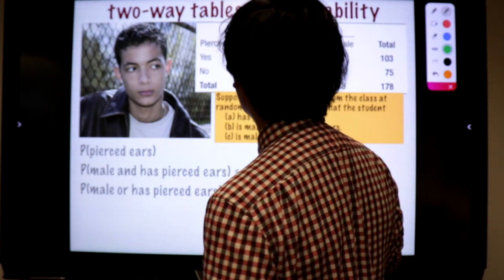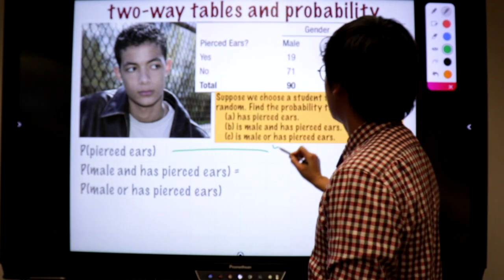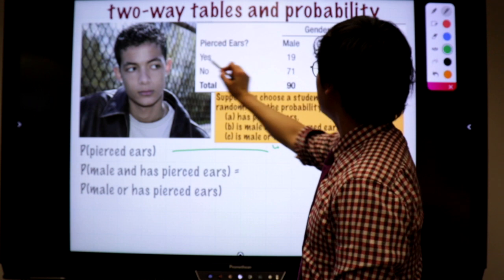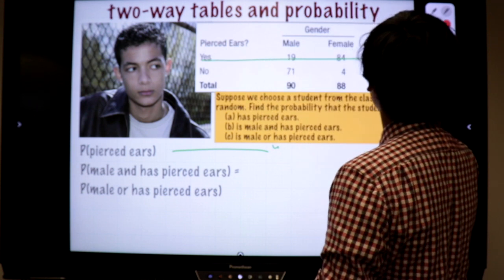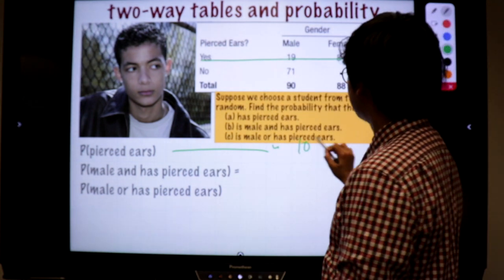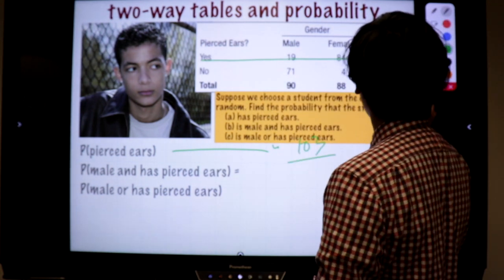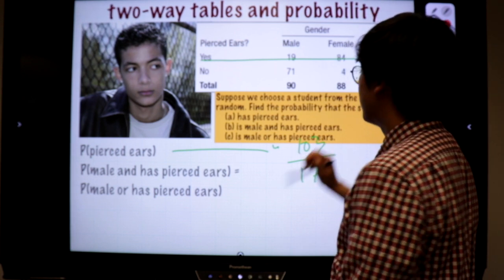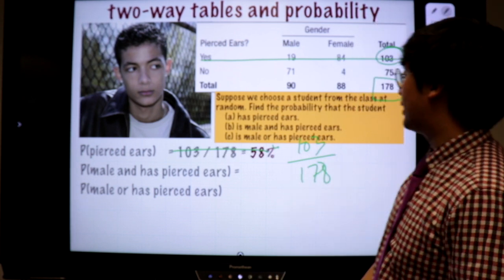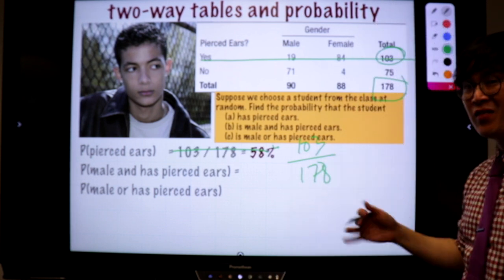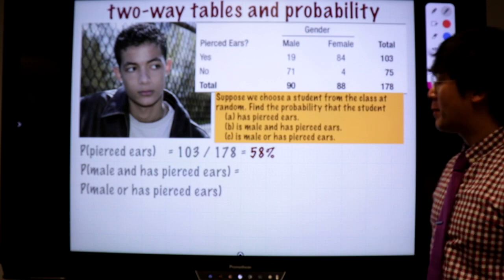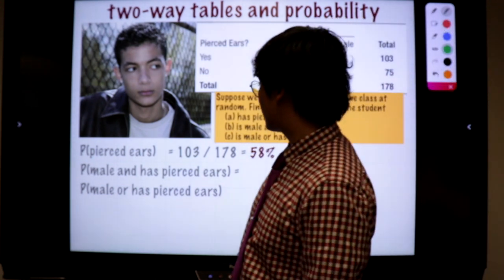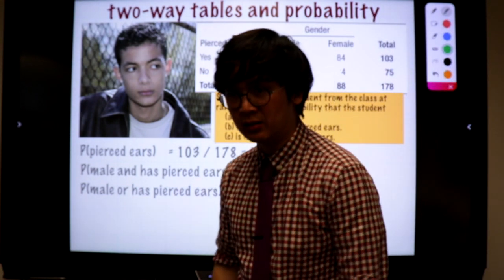The first one: pierced ears, which means pierced ears yes. The total is 103 out of the total number of students, which is 178. So that is the probability, which is about 58%. What about the second one — male and has pierced ears?